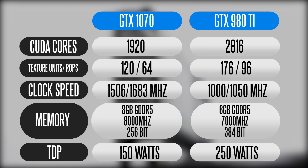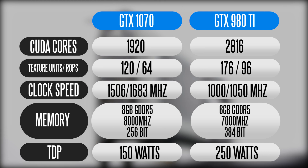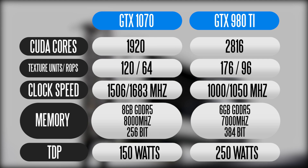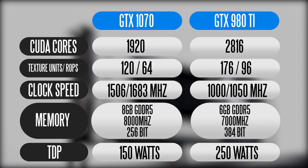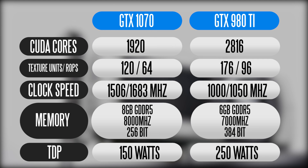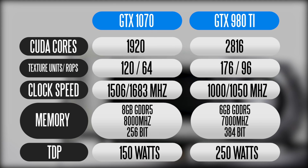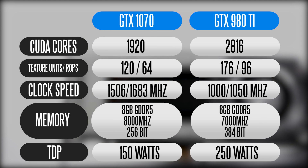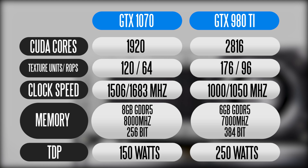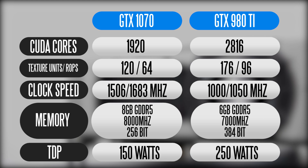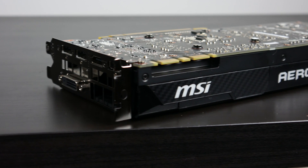Lastly, with the new Pascal architecture, the TDP on the GTX 1070 is certainly a lot more efficient, rated at about 150 watts versus the 980 Ti rated at 250 watts.